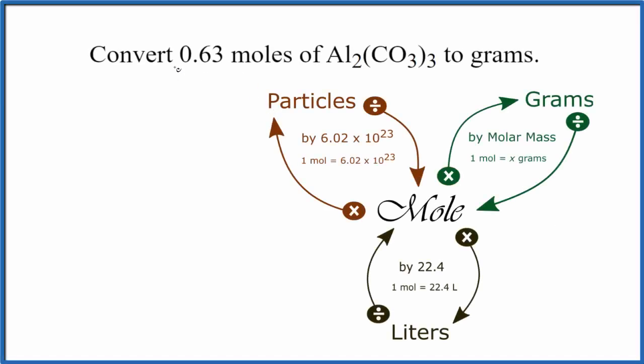In this video, we'll convert 0.63 moles of Al2CO33 to grams. This is aluminum carbonate.